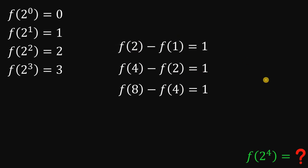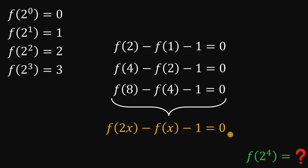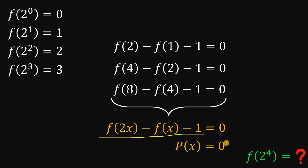Now why is this important? Because when we subtract 1 from these 3 equations, we arrive at f of 2 minus f of 1 minus 1 equals 0, f of 4 minus f of 2 minus 1 equals 0, and f of 8 minus f of 4 minus 1 equals 0. We can rewrite this as f of 2x minus f of x minus 1 equals 0, because 8 is 4 times 2, 4 is 2 times 2, and 2 is 2 times 1. Let's call this P of x, so P of x equals 0 where P of x is f of 2x minus f of x minus 1.